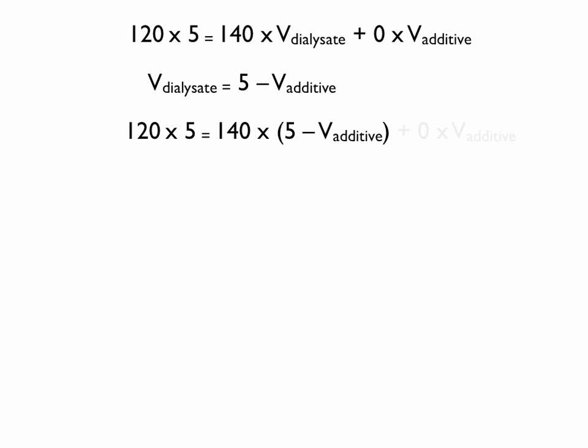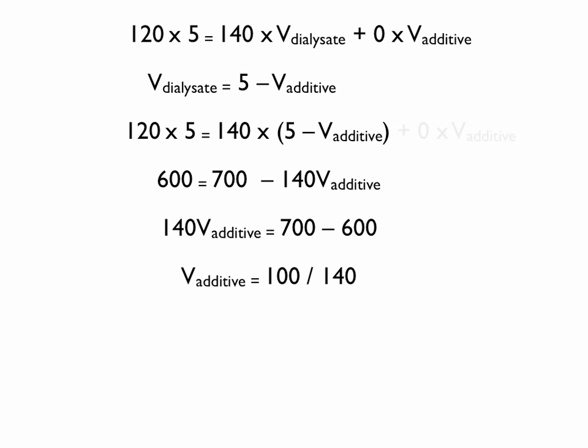Let's go to a clean piece of paper. This is what it looks like, and now we'll start to do the math. 120 times 5 is 600. 140 times 5 is 700, and then 140 times the volume of the additive. We will solve for the volume of the additive and the equation will be rearranged like that. We will then divide 100 by 140 to get our final answer. So you will need to add 710 cc's of D5W to 4.29 liters of your dialysate, and you'll get a final sodium concentration of 120.